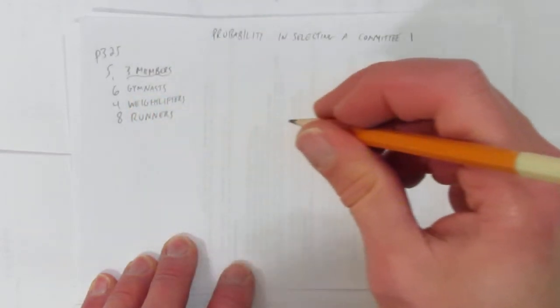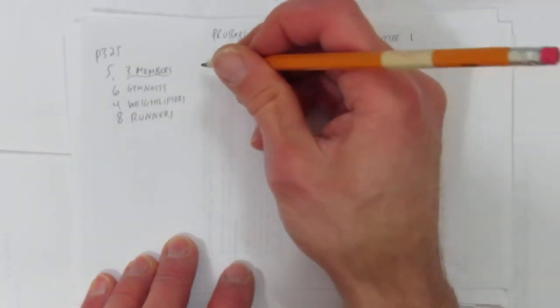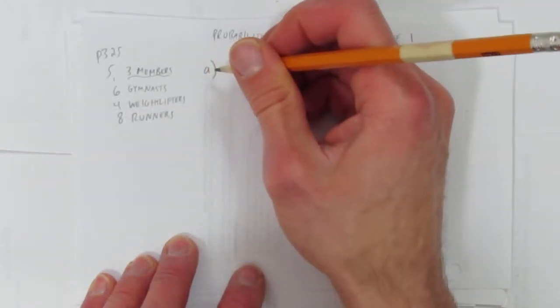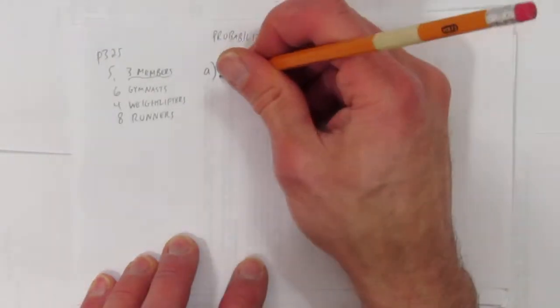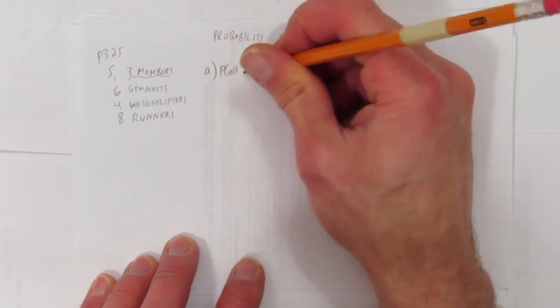So this question says, determine the probability for 5a that the committee is composed entirely of runners. So what's the probability that it's all runners?